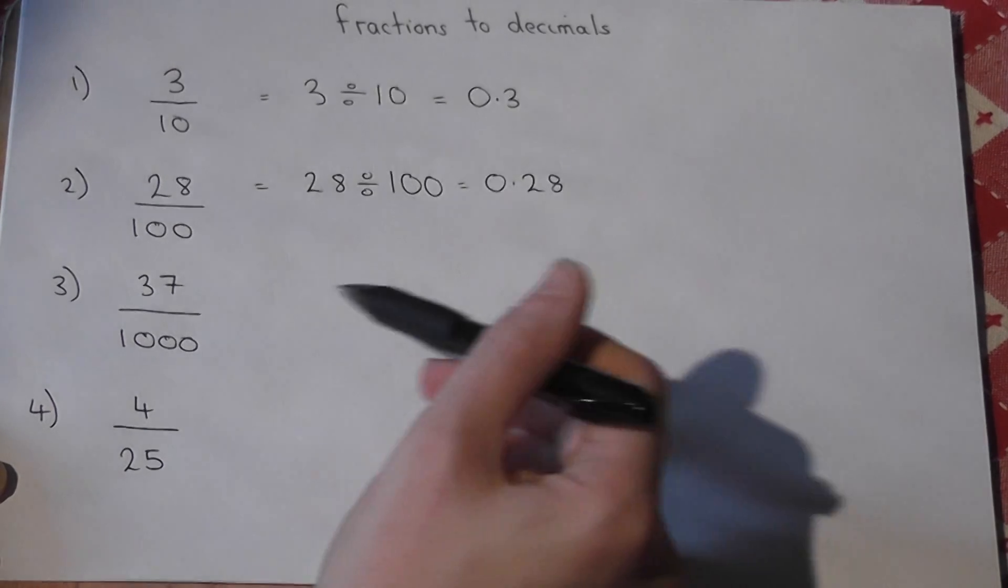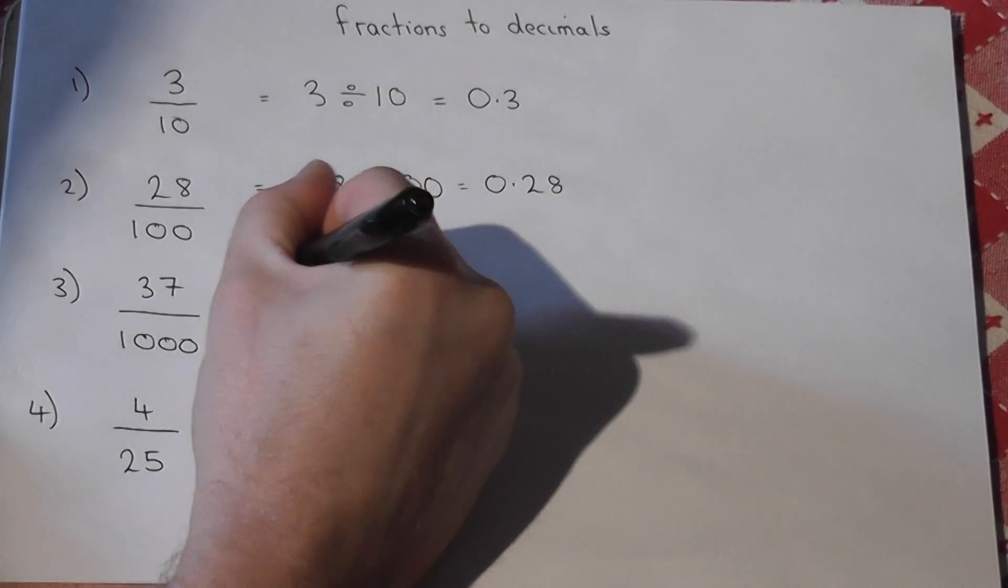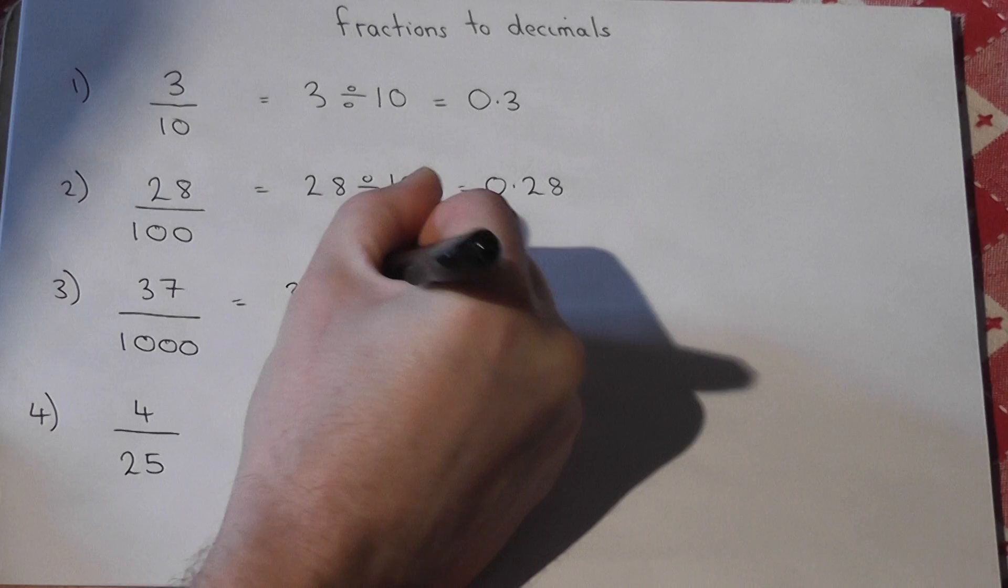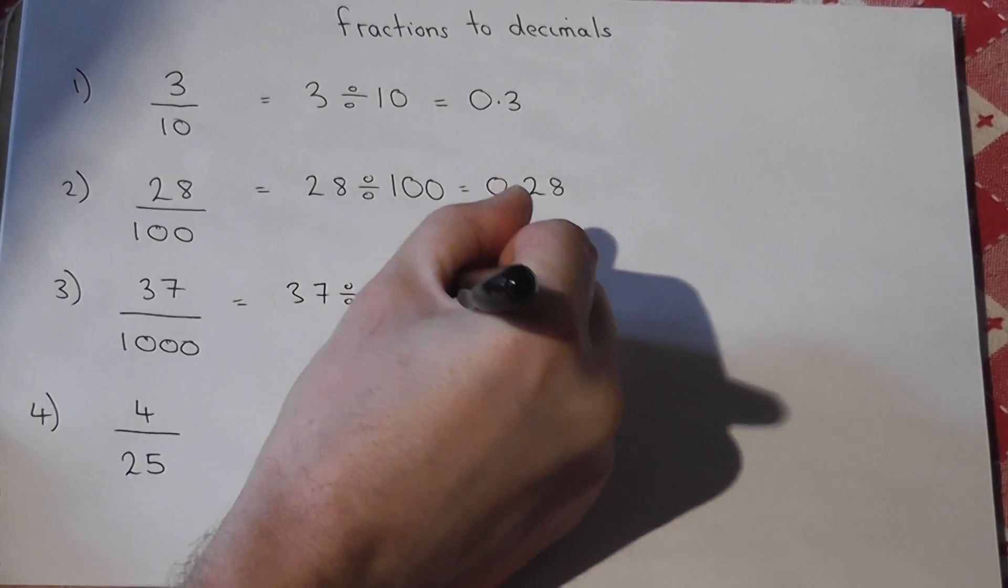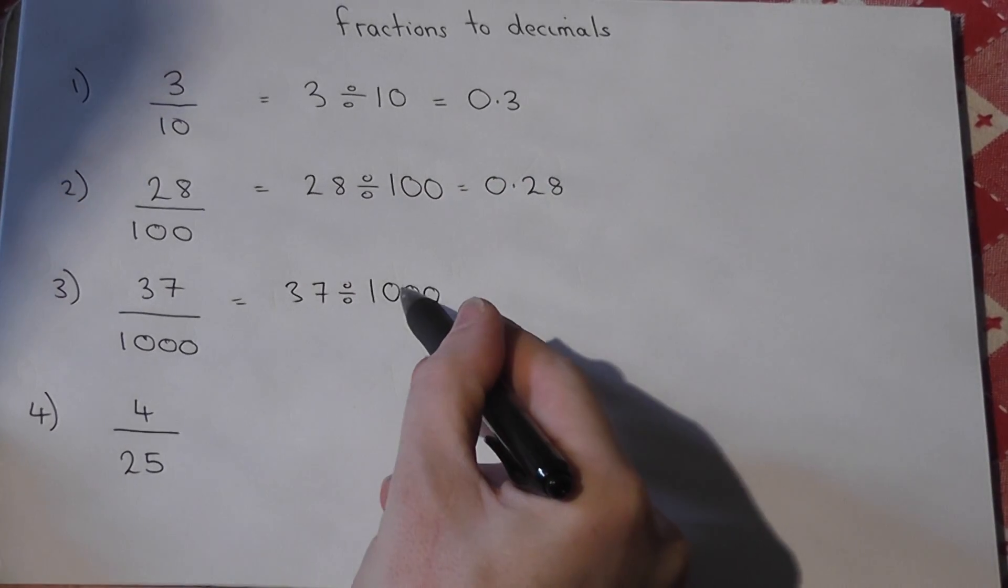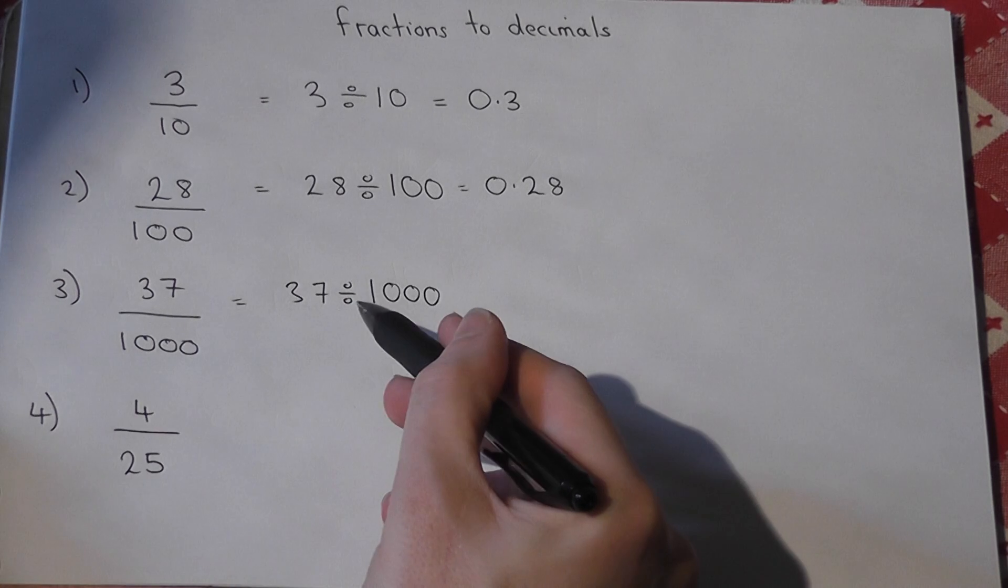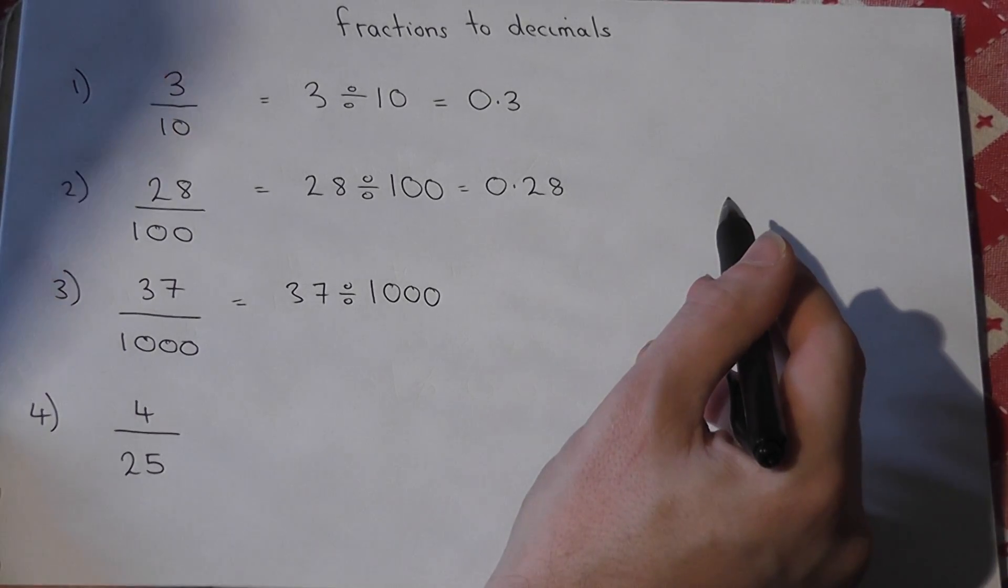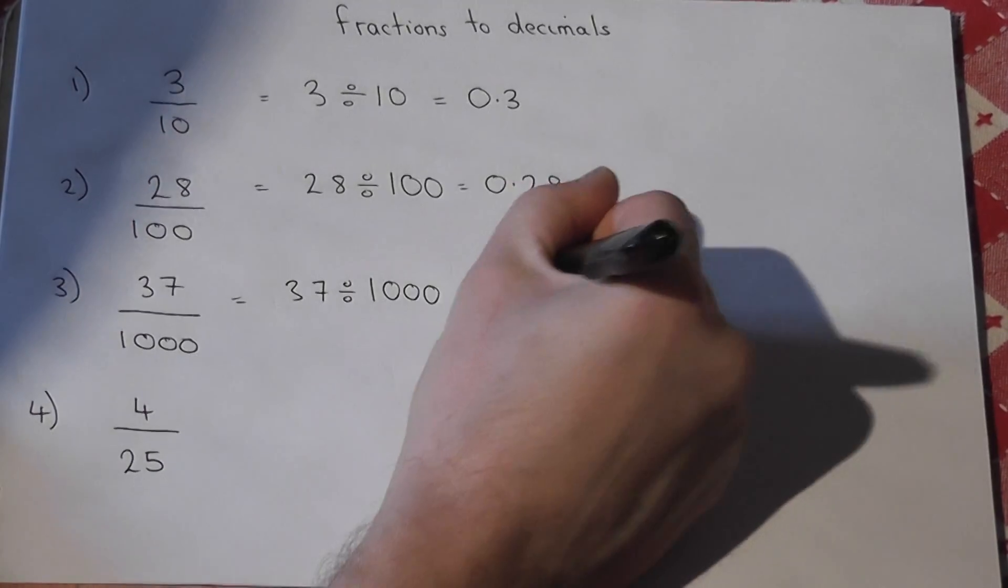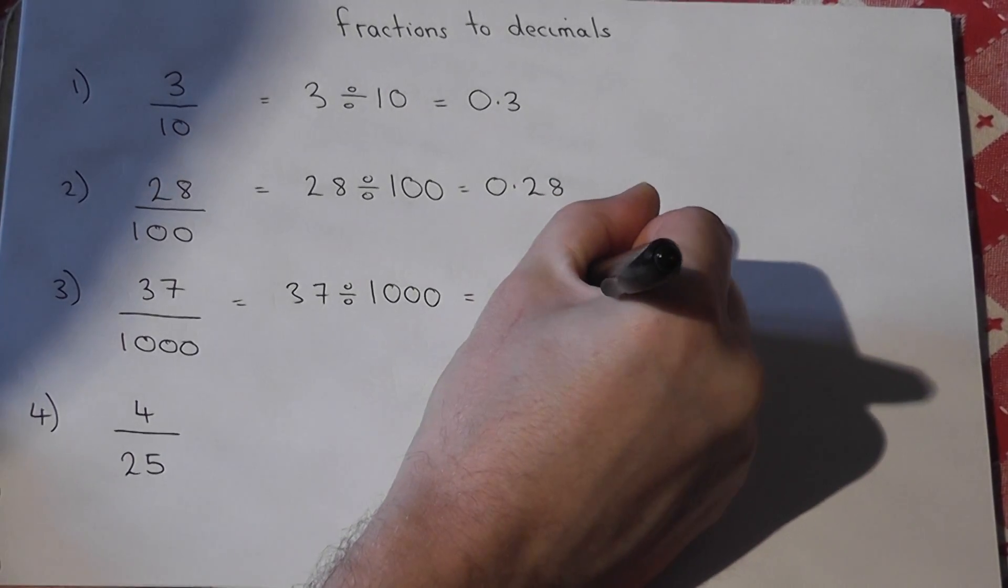So the third one, 37 over a thousand, just means 37 divided by a thousand. So now it moves one, two, three places to the right. So 37 goes one place, 3.7, then 0.37, and then 0.037.